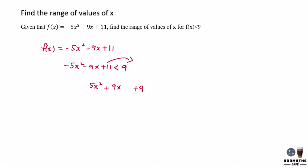And we will have a minus 11 over here and 0 over here. So after this, make it a general form. And this is what you get: 0 < 5x² + 9x - 2.